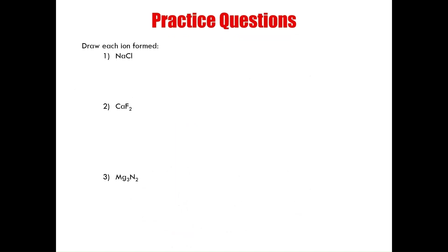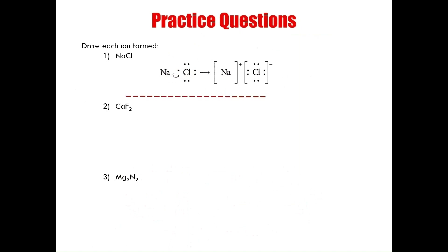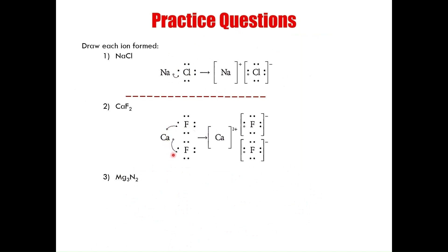Let's look at some practice questions. For sodium chloride, this is a much easier example — sodium loses an electron to the chlorine atom, creating these two ion structures. For calcium fluoride, we have a very similar example to magnesium fluoride, where the calcium ion is formed by losing two electrons, one to each fluorine atom, to create two fluorine ions.